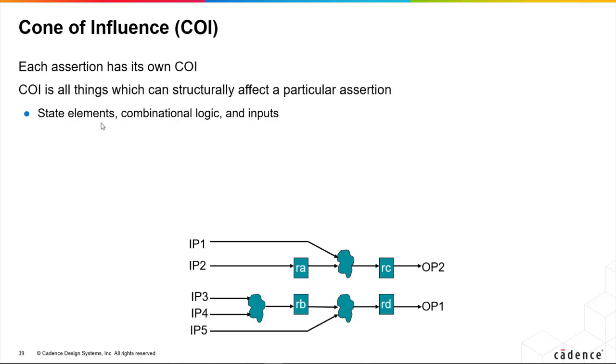When we talk about only a part of the design required to prove an assertion, this is known as the cone of influence, or COI. Sometimes people call it COI, but that's the acronym.